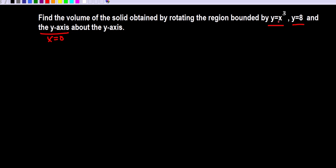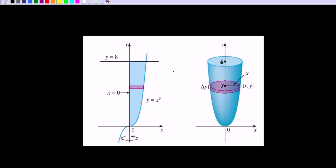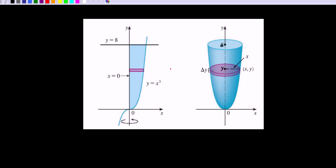Let's find the region bounded by these three curves. We have y equals x cubed, y equals 8, and the y-axis which is x equals 0. We have this region, and we want to rotate it about the y-axis. When we rotate about the y-axis we get this solid, and this is a sample slice of small thickness delta y.